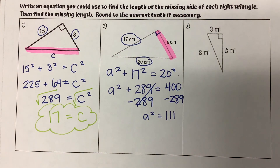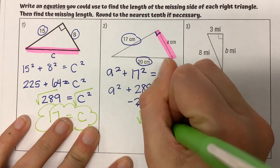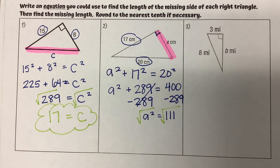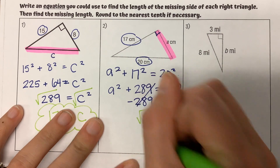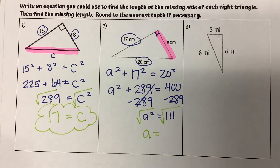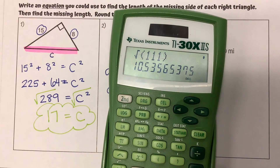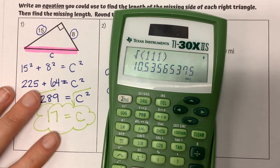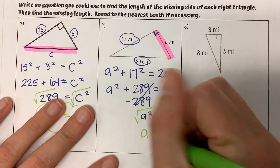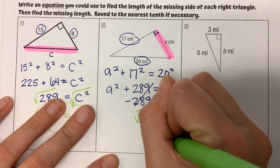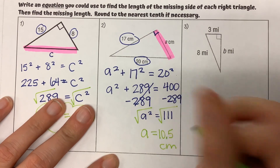For the last part, we want A alone, so we're going to take the square root of that. The square root of A is just A. Plugging into my calculator, the square root of 111 gives me a long, messy number, which I'm going to round to the nearest tenth to be 10.5, and our units were centimeters.